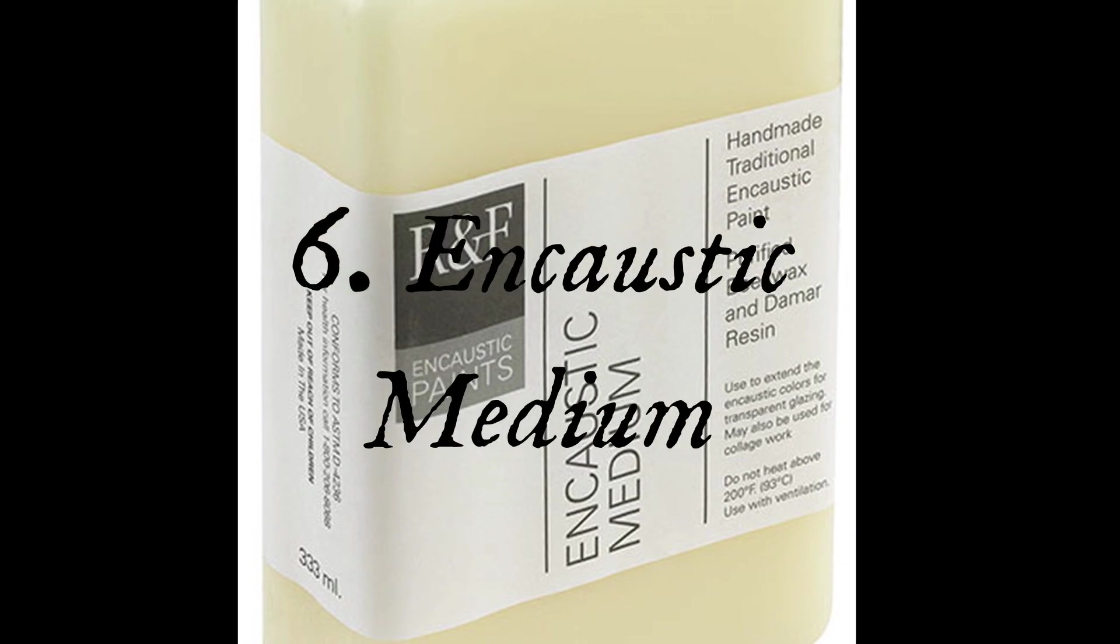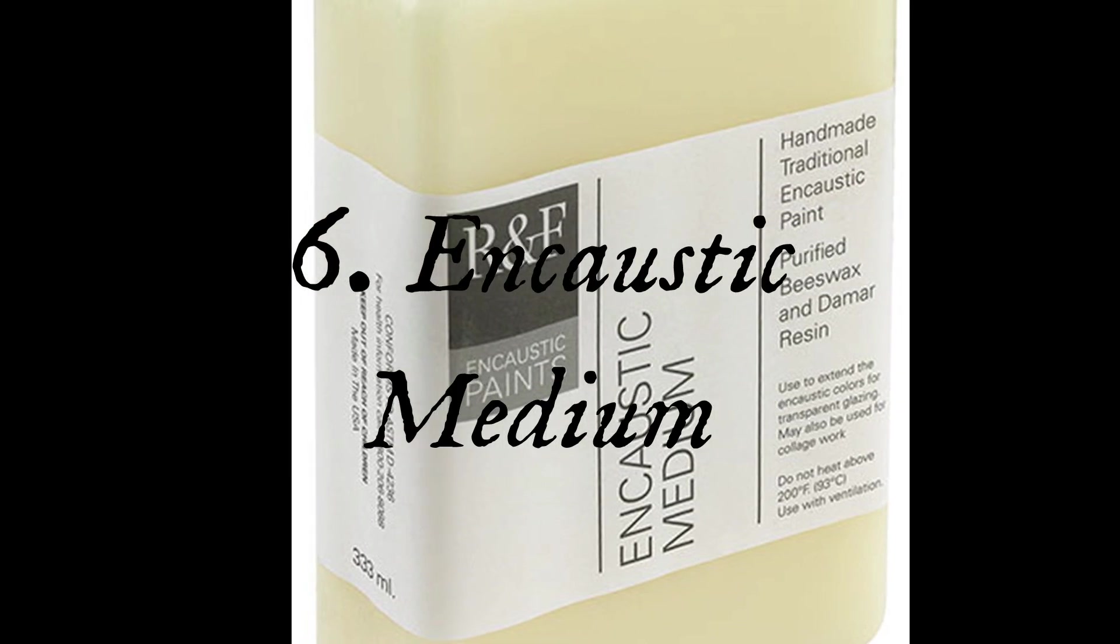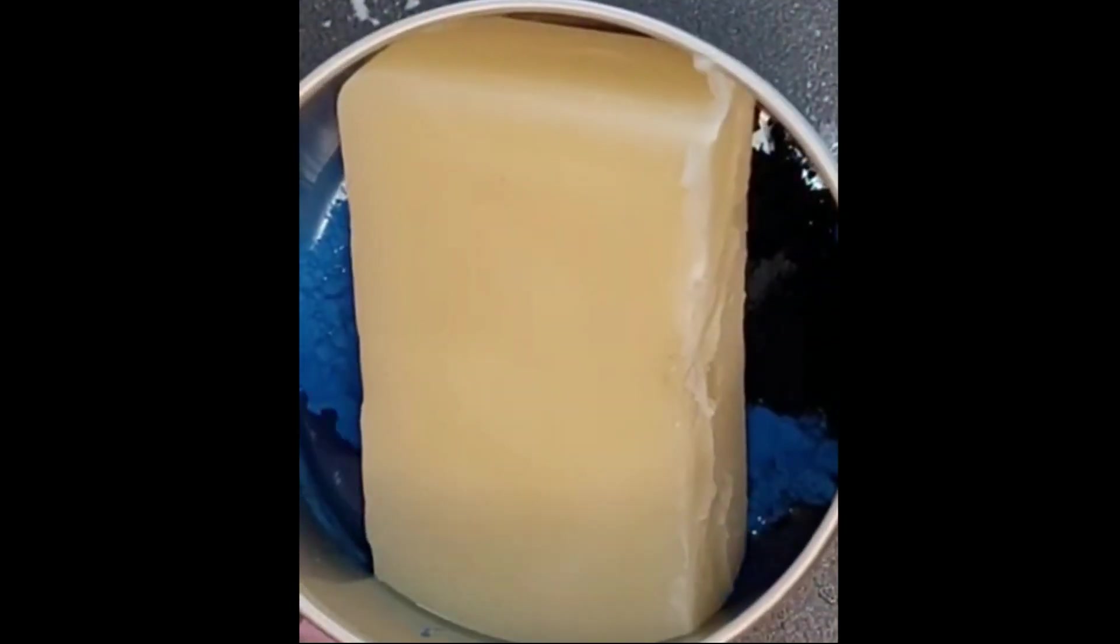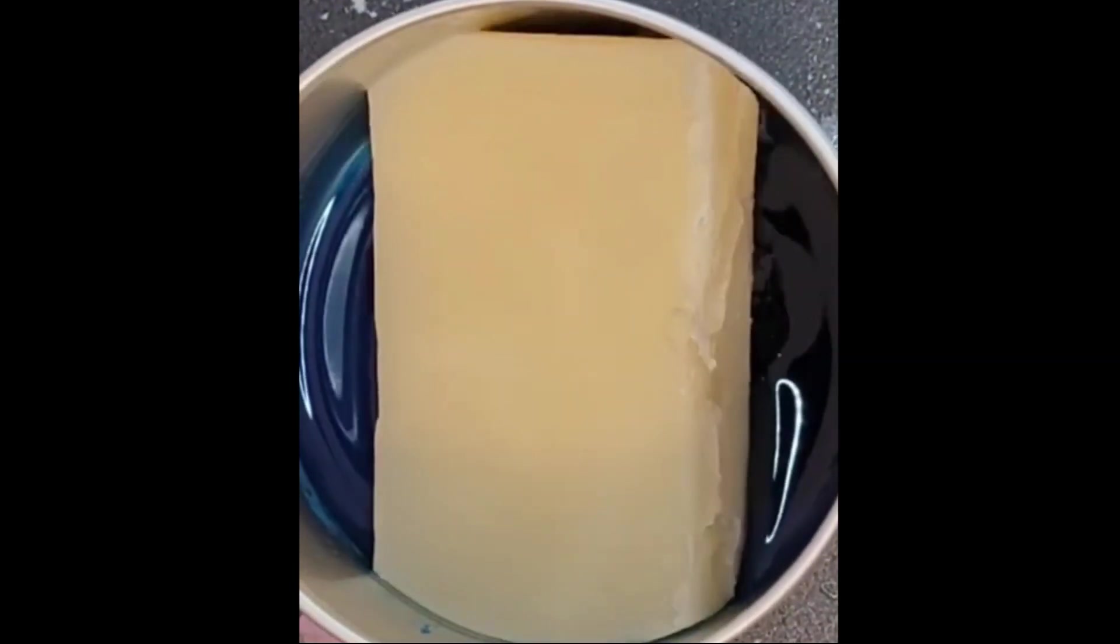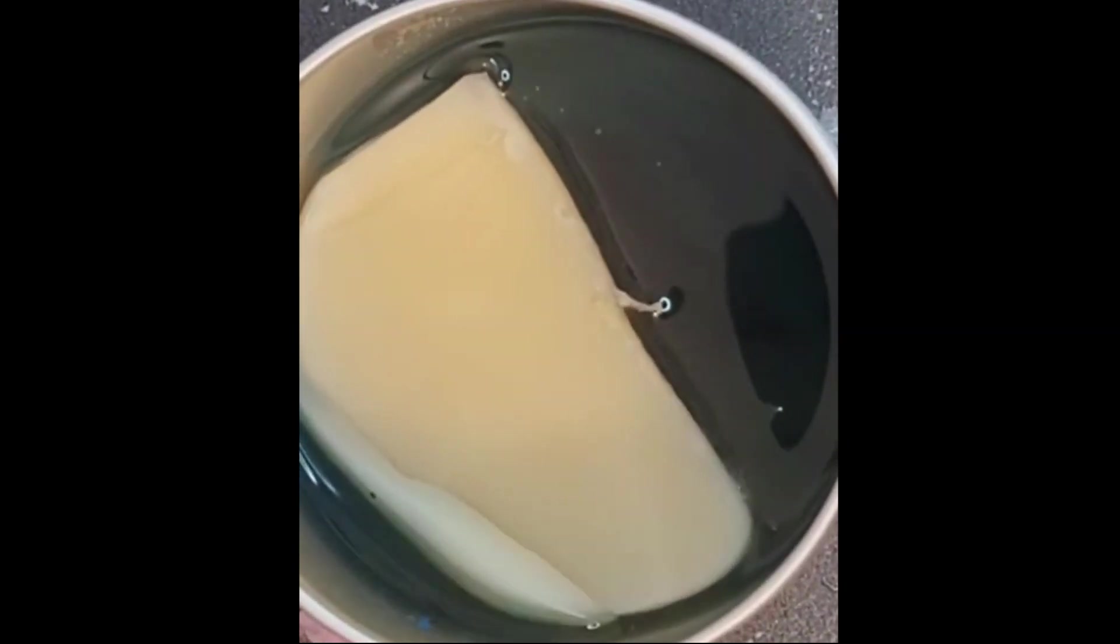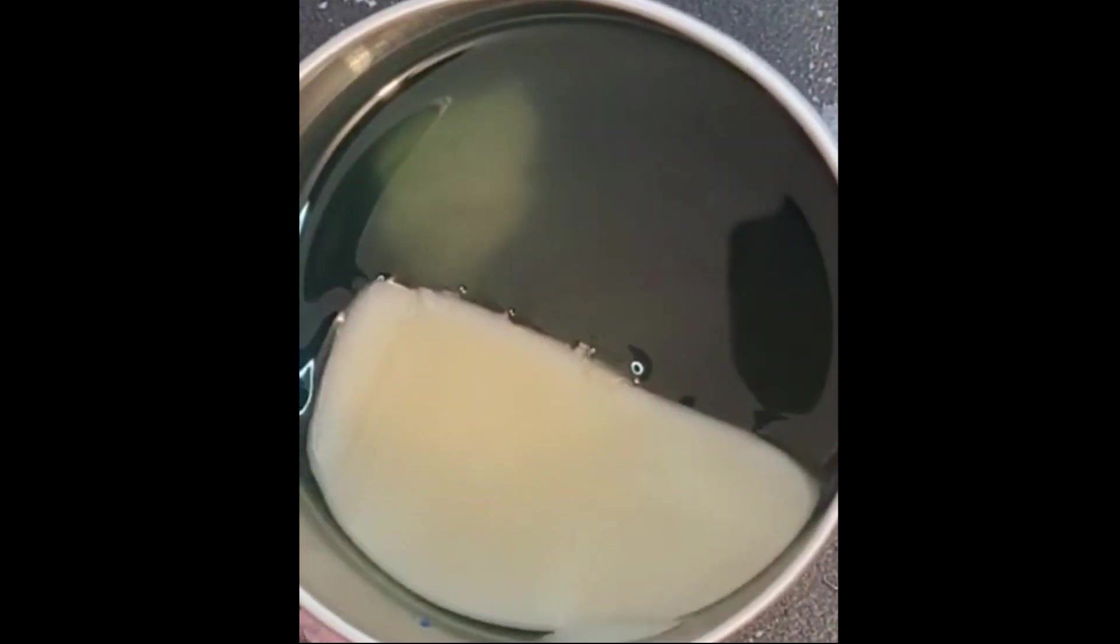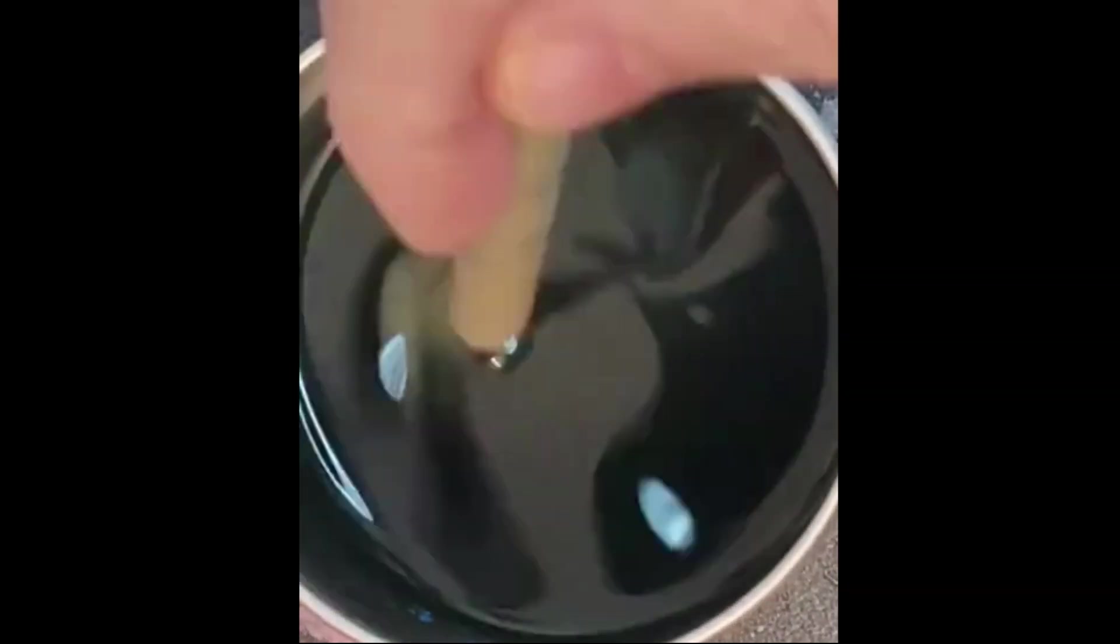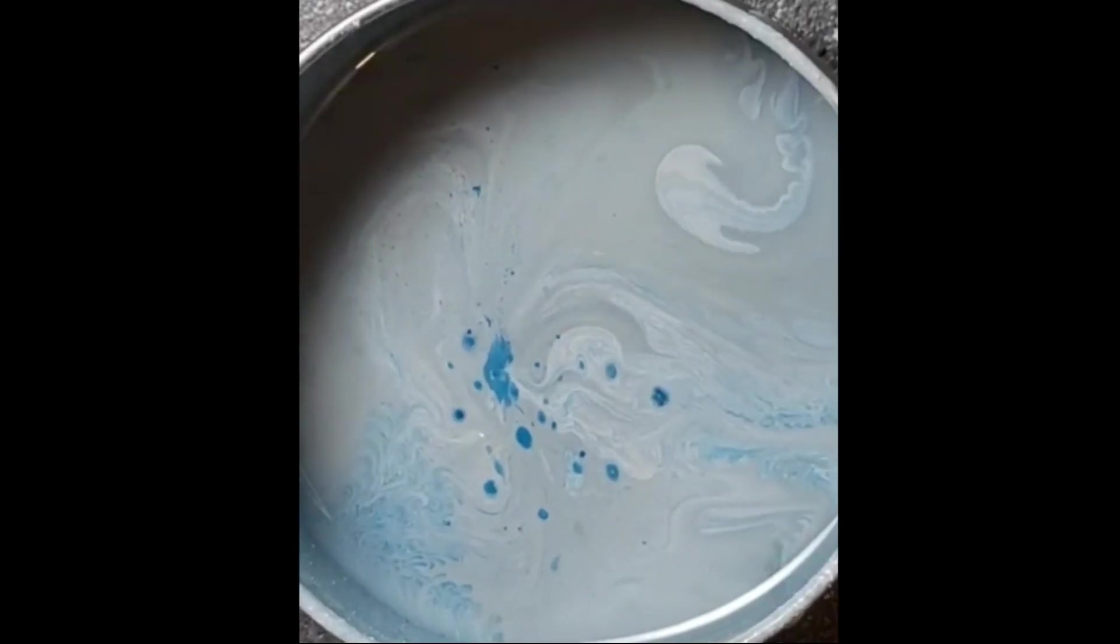And number six, encaustic medium. Of course, you're going to need some paint. I recommend starting with three colors of encaustic medium: clear, white, and the color of your own choice. I make my own medium and I color it myself. But as a beginner, you'll probably want to purchase some. I like Swans Encaustic. They're a small business in Washington State and are a little more affordable than R&F most of the time. But sometimes it's nice to just get some from Amazon.